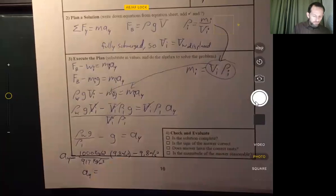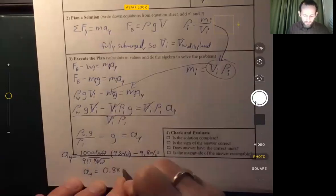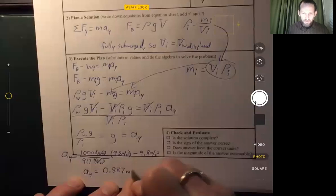So now we can plug these in. 1,000 divided by 917 times 9.8 minus 9.8, and we get 0.887 meters per second squared.